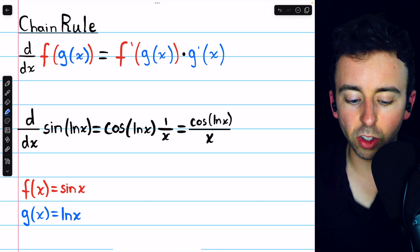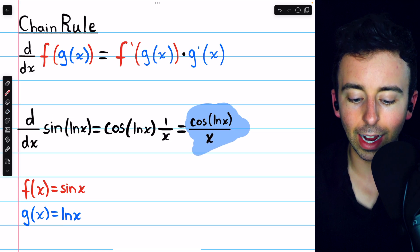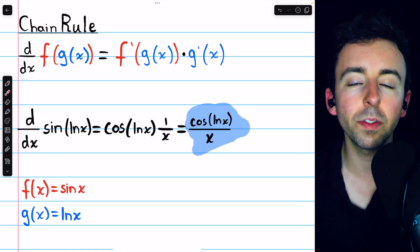So that's the derivative, which if you prefer, you could bring together as cosine of ln(x) over x. And that's how to take the derivative of sine of ln(x).